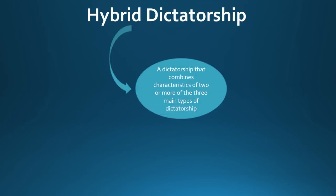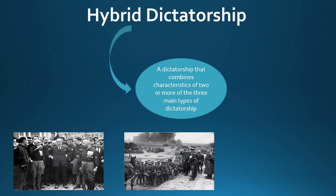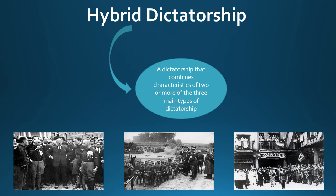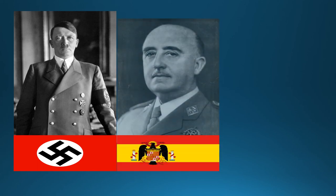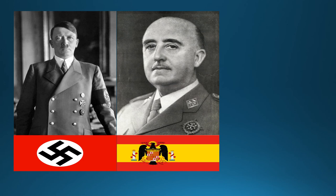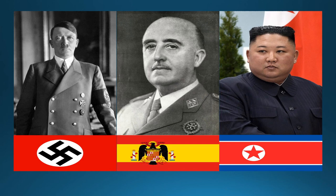A hybrid dictatorship is a dictatorship that combines the characteristics of two or more of the main types of dictatorships. Examples include Nazi Germany, which combined elements of personalist rule under Adolf Hitler with a single-party state under the Nazi Party; Spain under Francisco Franco, which combined elements of personalist and military dictatorship; and today, Kim Jong-un's rule in North Korea, which combines elements of a personalist dictatorship with a single-party state.